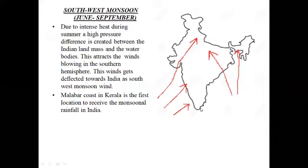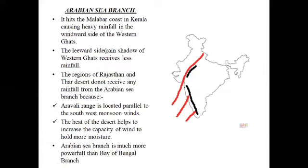The monsoon first hits Kerala, causing heavy rainfall over the Malabar Coast in Kerala. The southwest monsoon can be divided into two branches: the Arabian Sea branch and the Bay of Bengal branch. The Arabian Sea branch hits the Malabar Coast in Kerala, causing heavy rainfall on the windward side of the Western Ghats.